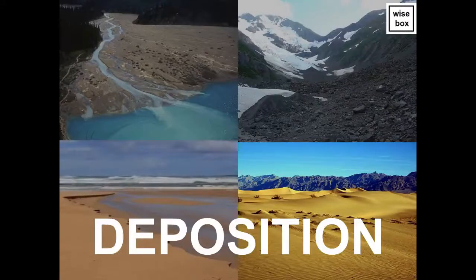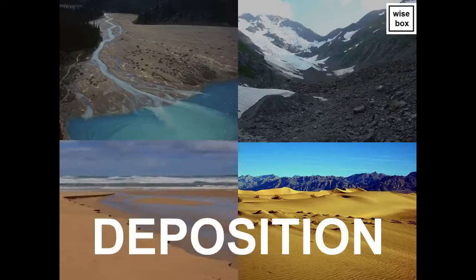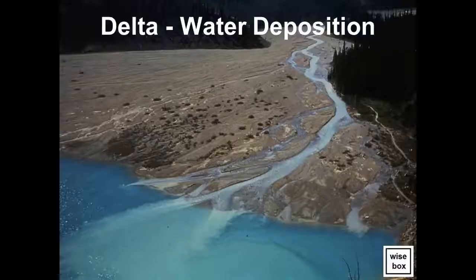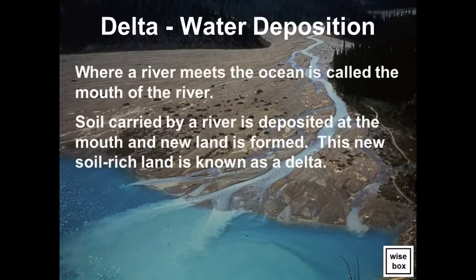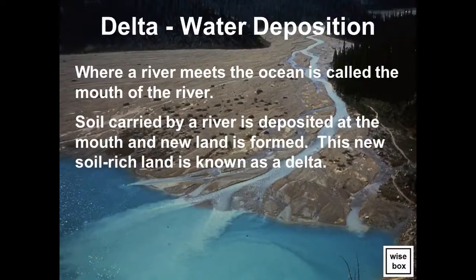Deposition occurs where a river meets the ocean, called the mouth of the river. Soil carried by a river is deposited at the mouth, and new land is formed. This new soil-rich land is known as a delta.